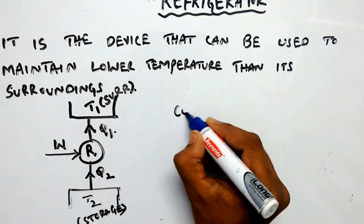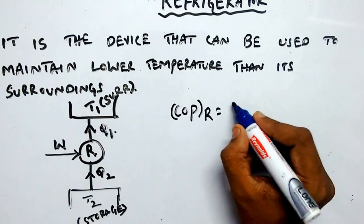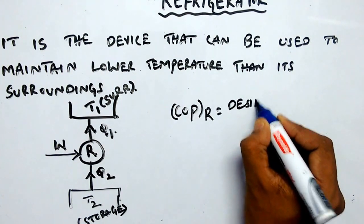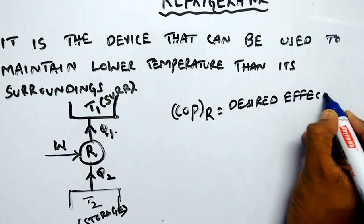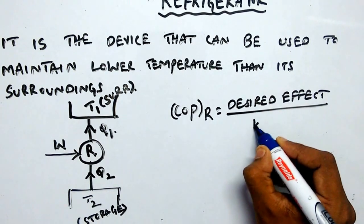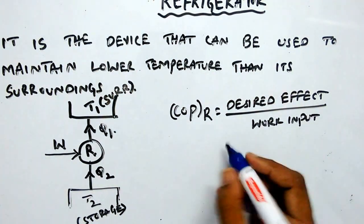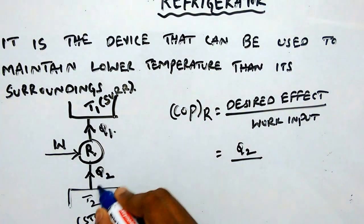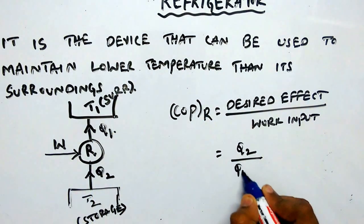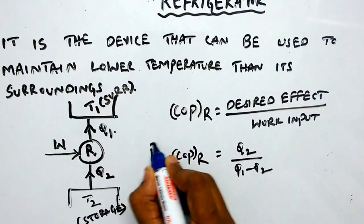So coefficient of performance of a refrigerator equals desired effect divided by work input. So that equals desired effect is Q2, work input is Q1 minus Q2, very important relation.